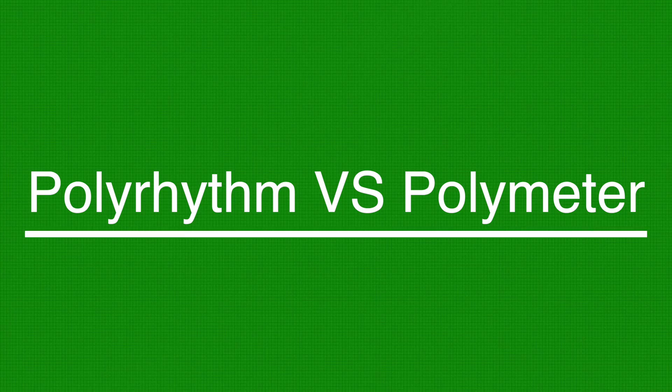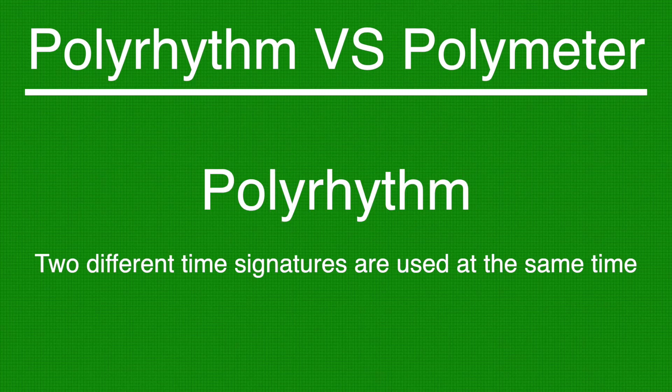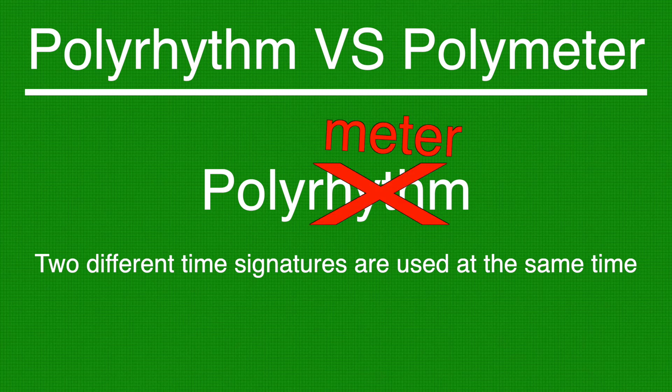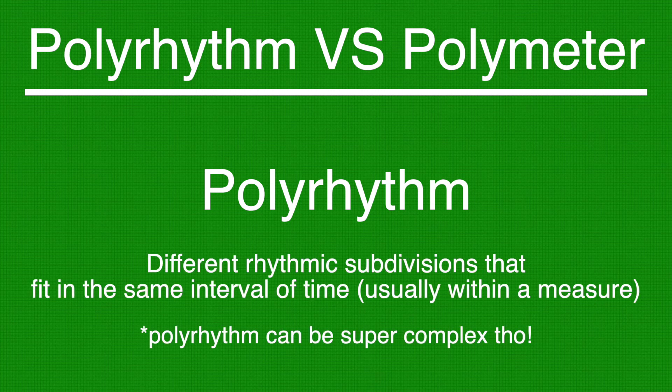What's the difference between polyrhythm and polymeter? People, including myself, often get them confused and think that polyrhythm is where two different time signatures are used at the same time. That's actually polymeter, so I'll explain that in more detail in a bit. Polyrhythm is a lot simpler and more common than polymeter. It is different rhythmic subdivisions that fit in the same interval of time, usually within the measure.